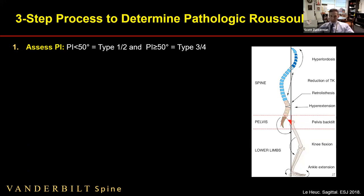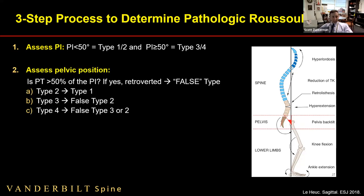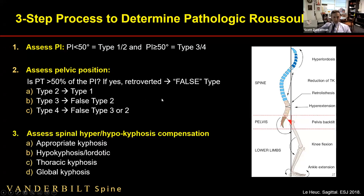Second, look at pelvic position. If pelvic tilt is greater than roughly 50% of the PI, the patient is retroverting the pelvis, which creates 'false types' — as pelvic tilt goes up, sacral slope goes down, so a Type 3 may look like a false Type 2 or a Type 4 may look like a Type 3. Third, look at the thoracic spine — is it appropriately kyphotic, or is there compensatory hypokyphosis, a lordotic thoracic spine, or are they degenerating toward thoracic or global kyphosis?